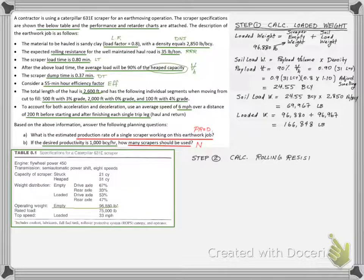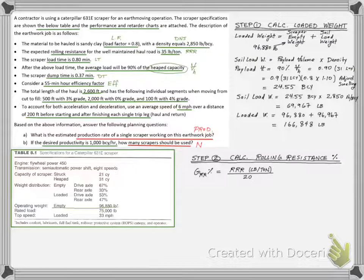The second step is to calculate the rolling resistance and equivalent grade percentage to be able to use the performance charts. We will transform the RR value to equivalent rolling grade percentage using this formula, as we derived it in the machine power lesson. We end up with about 2% rolling equivalent grade.